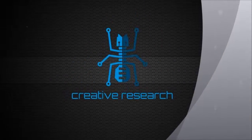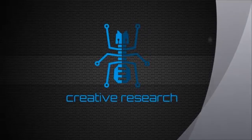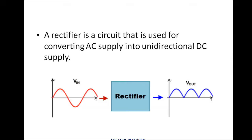Hi everybody, this is Creative Research Team. We will discuss rectifiers and types of rectifiers today. Basically, a rectifier converts AC to DC — it converts an AC supply into a unidirectional DC supply. We will discuss the different types of rectifiers, the components used, and how AC is converted into DC.